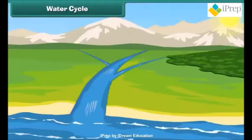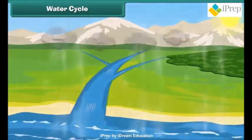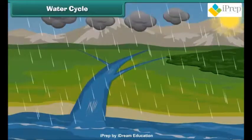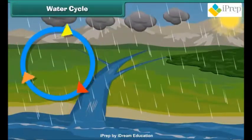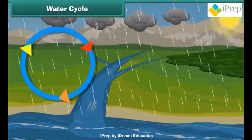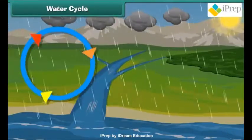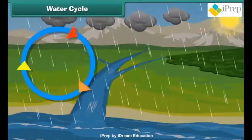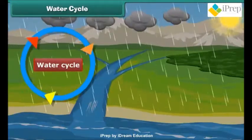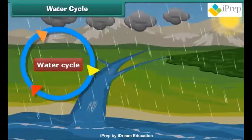Finally, the water reaches the water bodies and gets collected there. You can see water is constantly cycling from land to air and back to land again. This process is known as the water cycle. Therefore, kids, water on our earth will never come to an end.